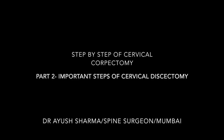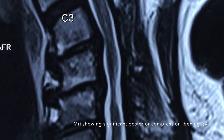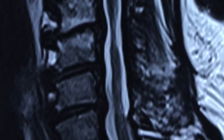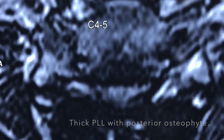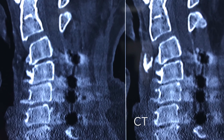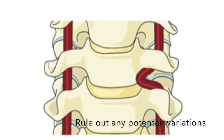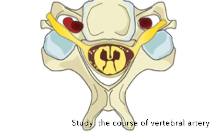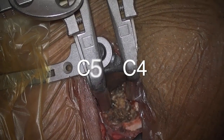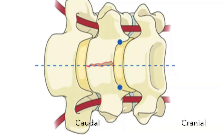In this Part 2 of the step-by-step cervical corpectomy, we will talk about how to do discectomies. Before you plan your discectomy, it is important to review the CT scan and the MRI. You need to rule out any variation in the anatomy or any variation of the vertebral artery. We will start with the C4-C5 discectomy.